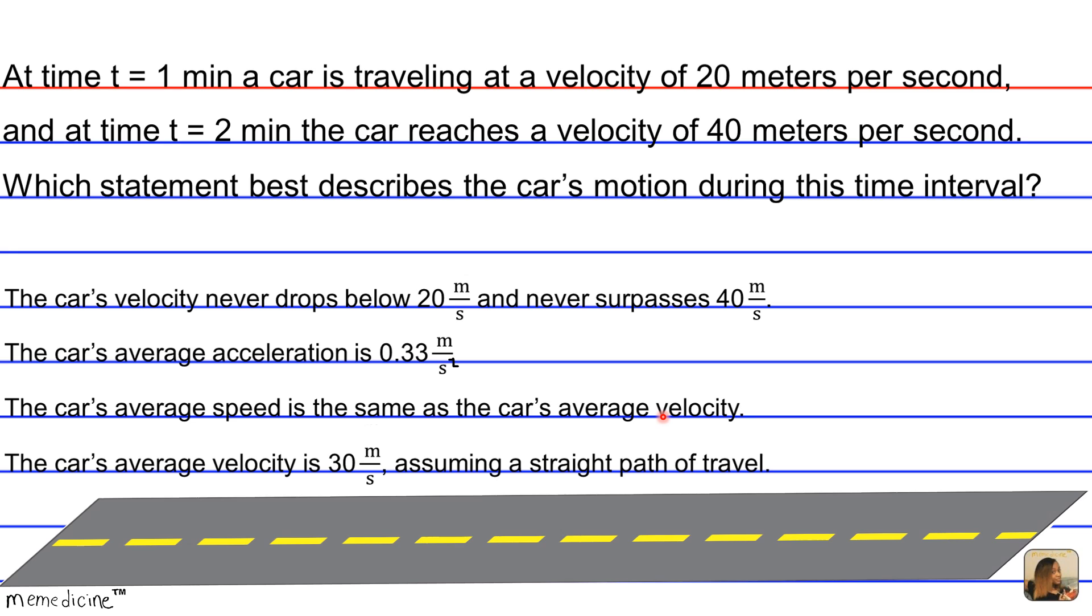If we were to assume a straight line in one direction only, they would be the same, but that's not mentioned here. The instantaneous velocity at one minute is 20 meters per second, and the instantaneous velocity at two minutes is 40 meters per second.